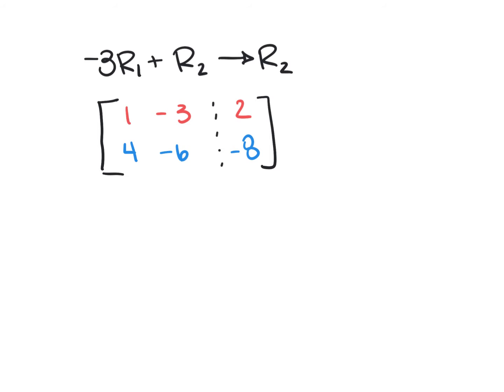So for this video, we're going to go over how to combine rows through operations. I'm presented with the example, negative 3R1 plus R2 becomes R2. Remember, all this says is that we're going to perform these operations to get a new row, which is row 2 here.